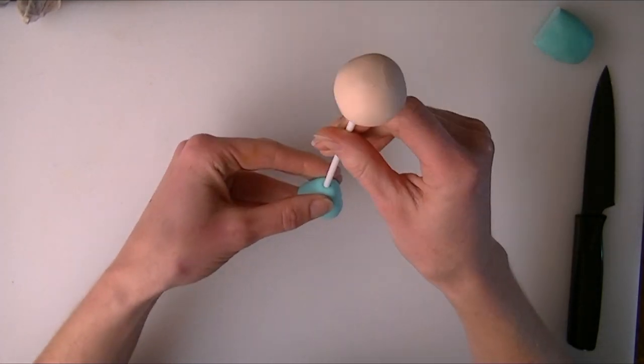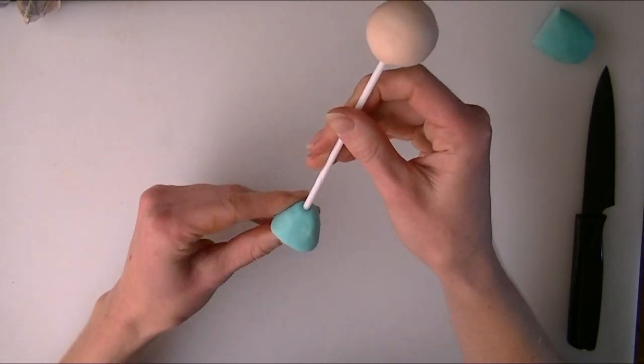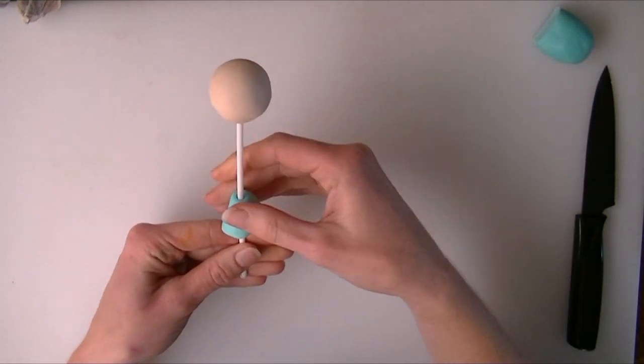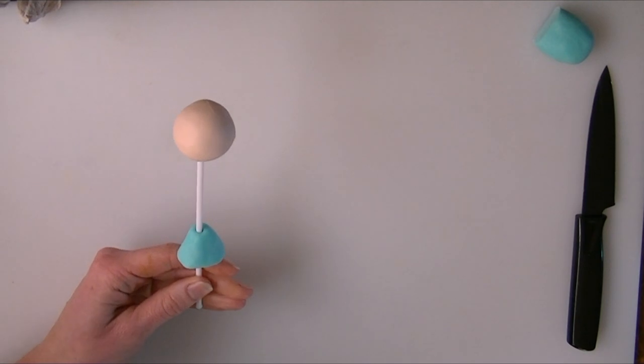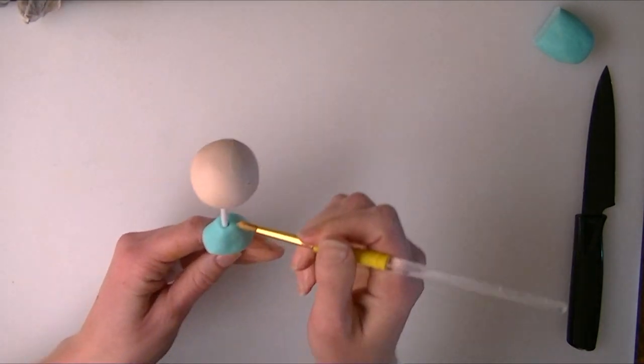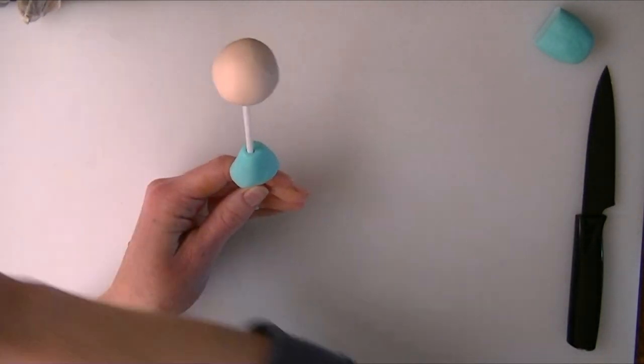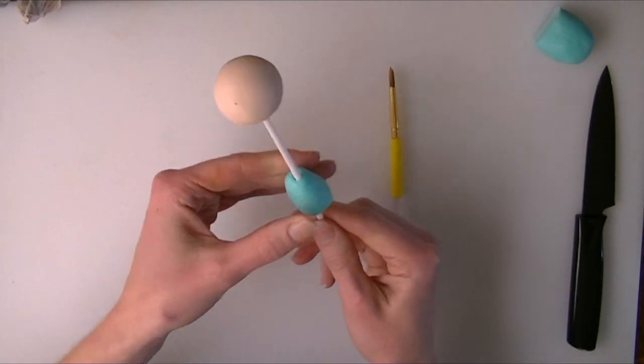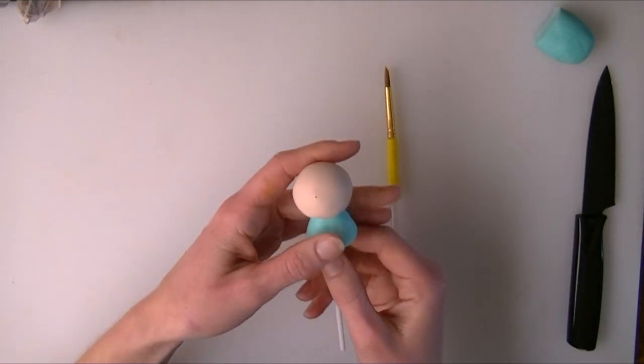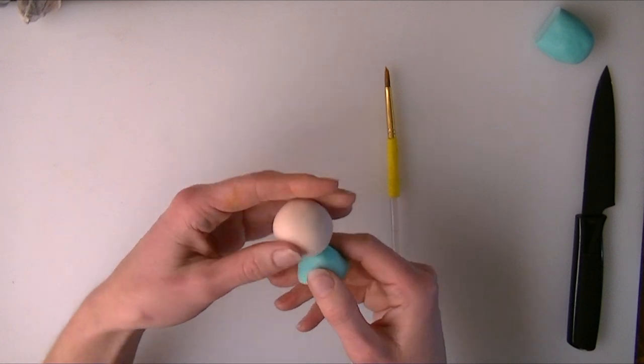I'm going to insert my cake pop stick into the end and what I'm going to do is put a small amount of water at the top of the fondant body and we're just going to push that up to the top.